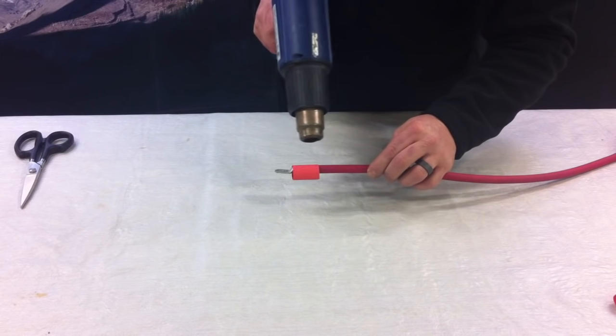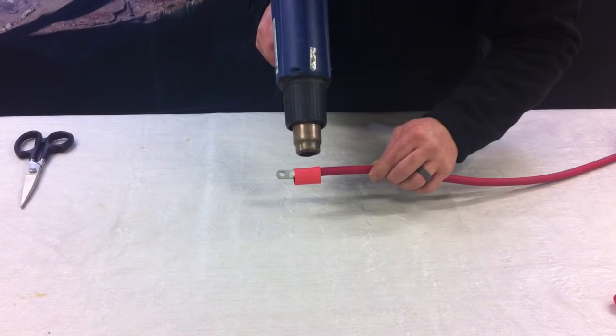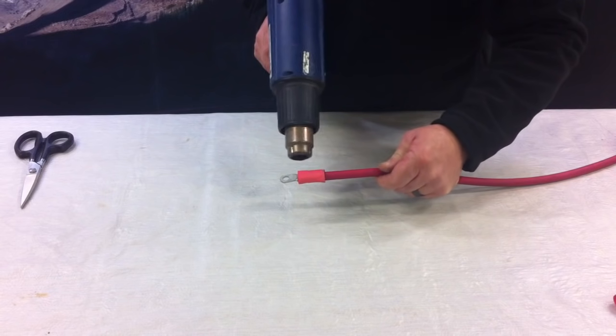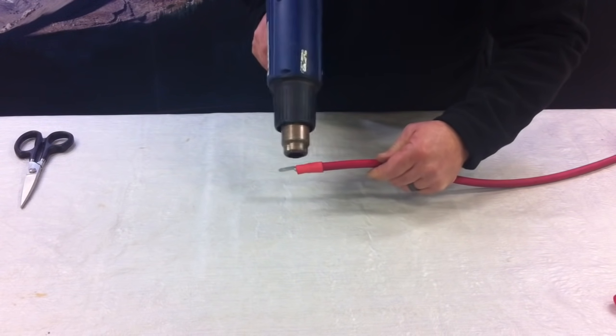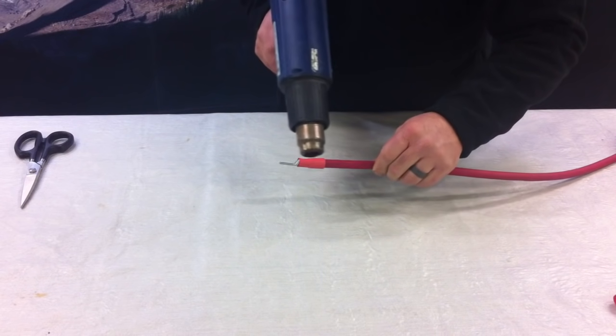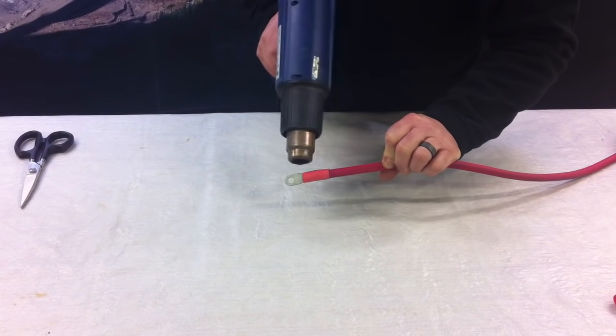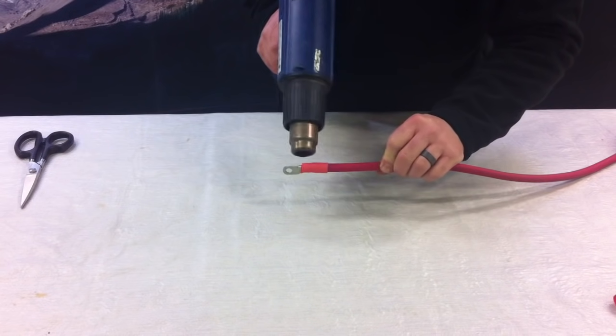We're going to go ahead and use our heat gun, making sure that we get it uniformly all around. Now one thing we want to make sure that we avoid here and I'll show you just in a minute once I get this done. There's actually two things I'm going to show you.